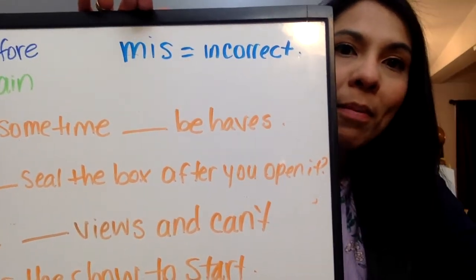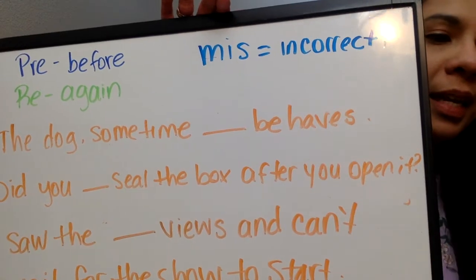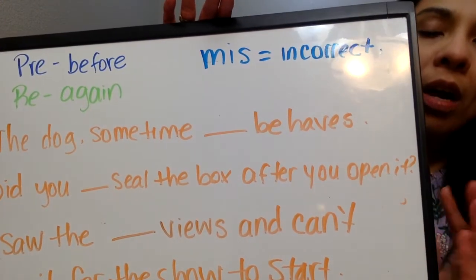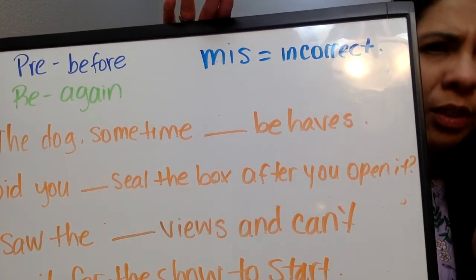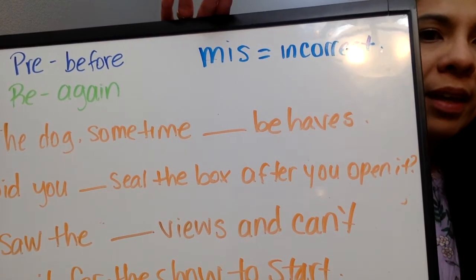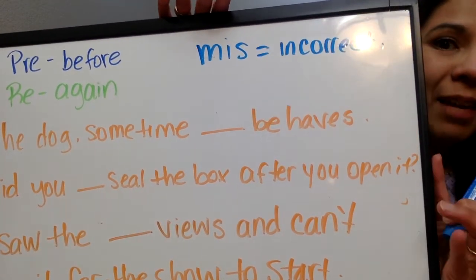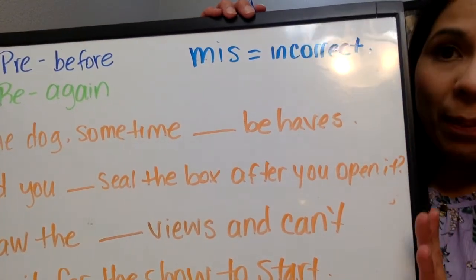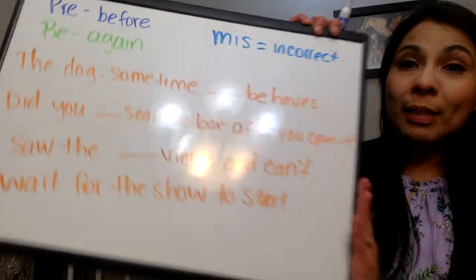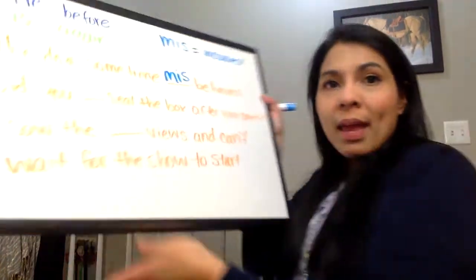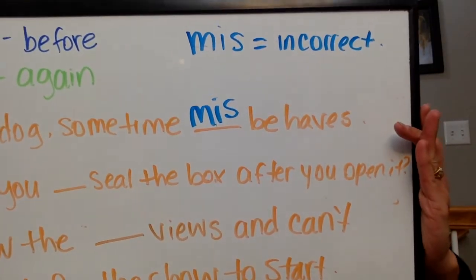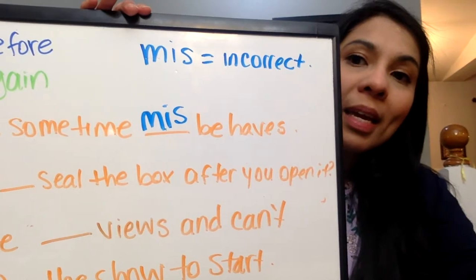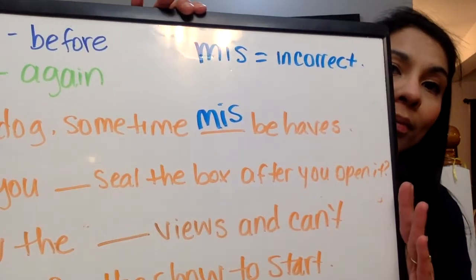I need you to see it. Let me move this a little bit so that you can see it. So the first one says, the dog sometimes behaves. So I have to know if it is misbehaves, rebehaves, or prebehaves. Well, if they are telling me that the dog behaves, that means that sometimes the dog doesn't do a good job behaving well, right? So that will be misbehave. I'm going to write misbehave. The dog sometimes misbehaves, right? Because it's telling me that it's doing something wrong.